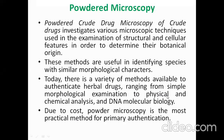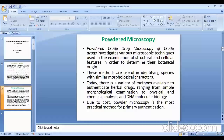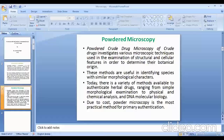Today a variety of methods are available to authenticate herbal drugs, ranging from simple morphological examination to physical, chemical analysis, and DNA molecular biology. Due to the cost of these techniques, powder microscopy is the most practical method for primary authentication. You only need a pestle and mortar to crush the material into powder form, or you can use a mixer or grinder, then place the powder on a slide and observe under a microscope.